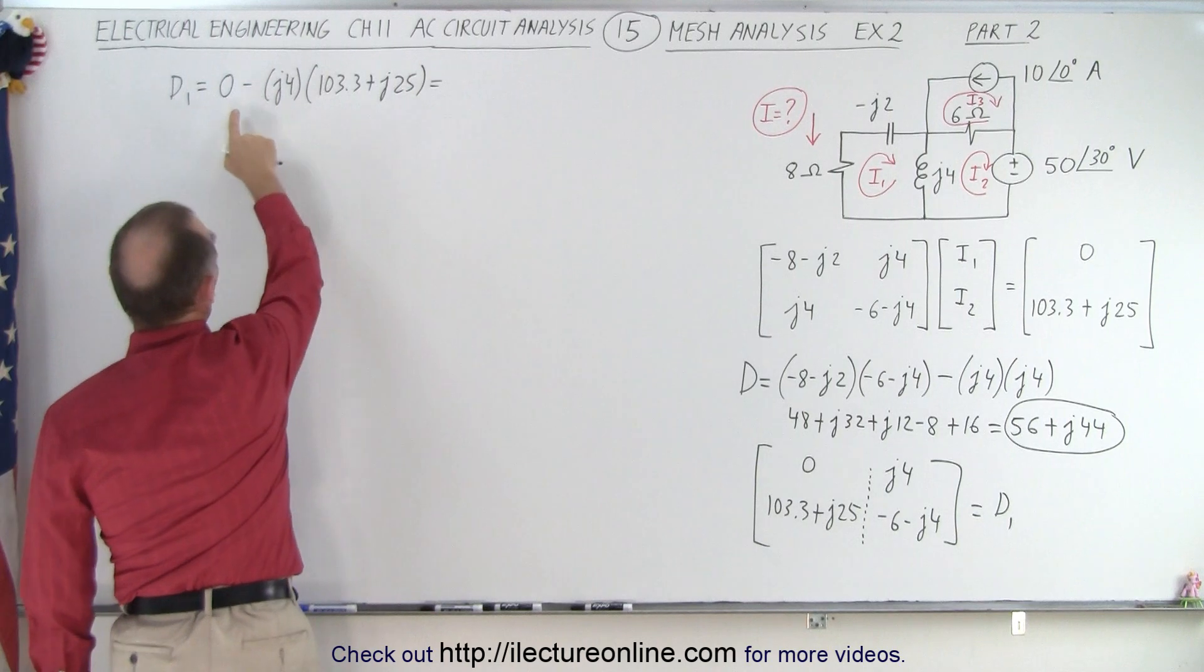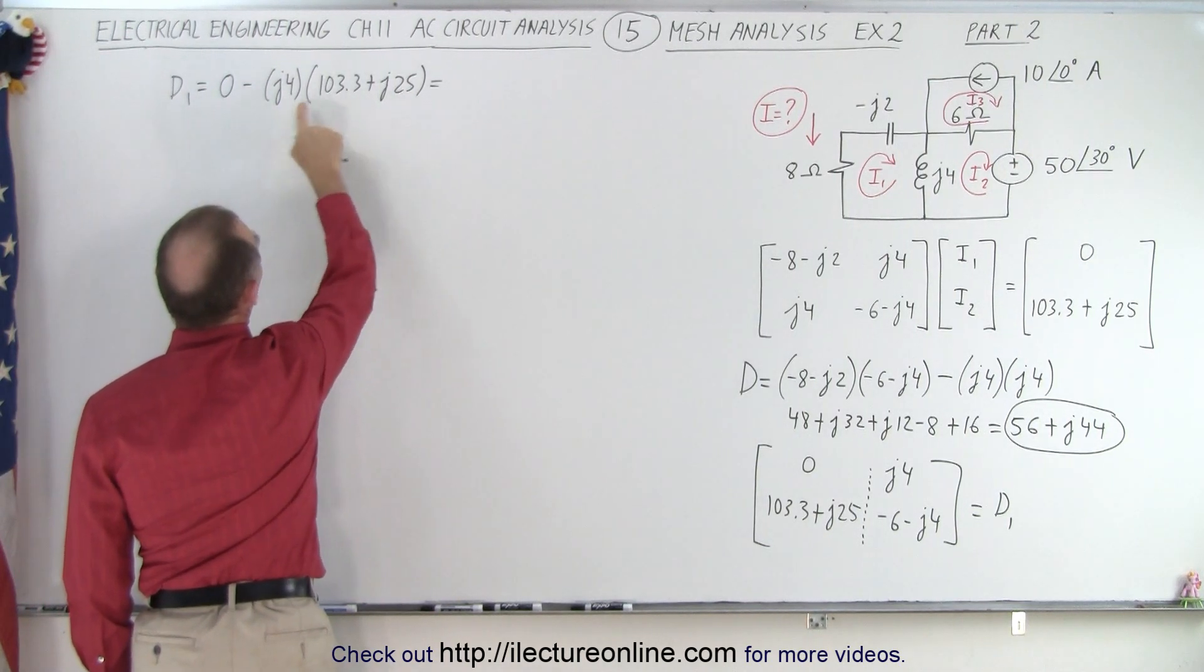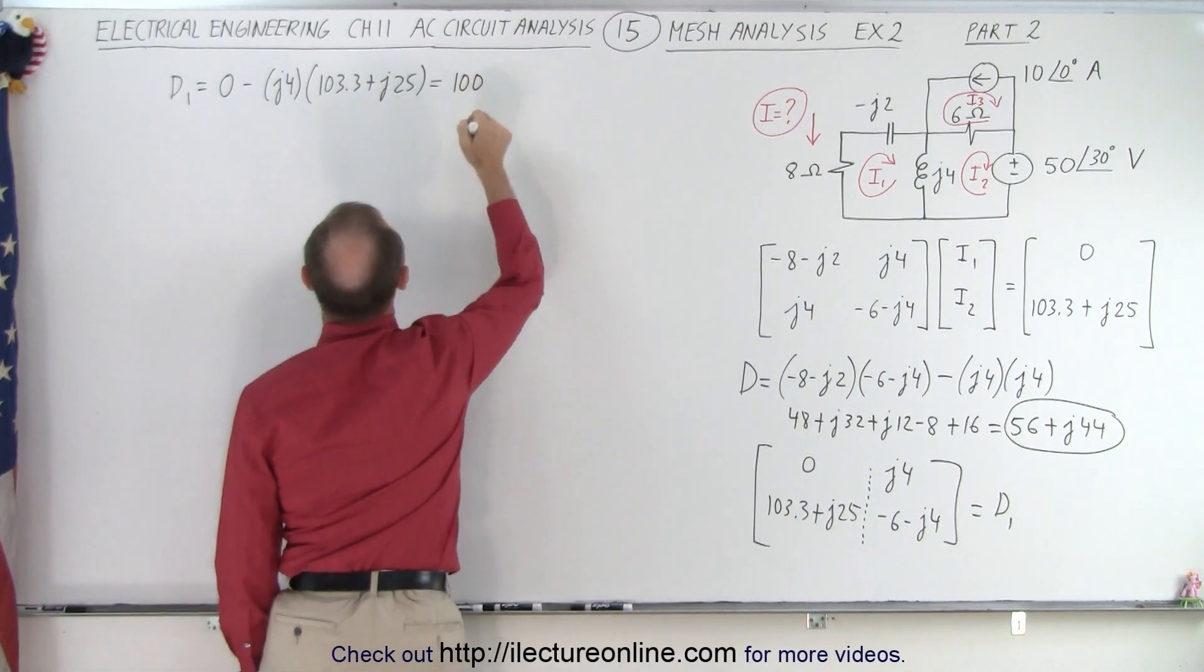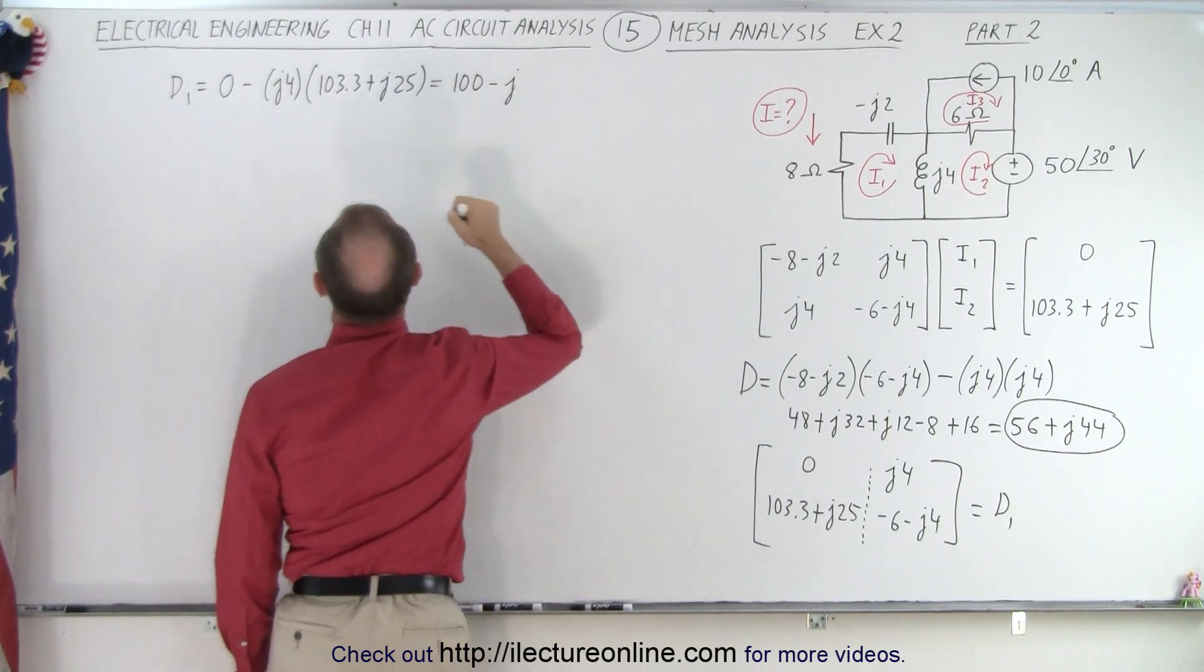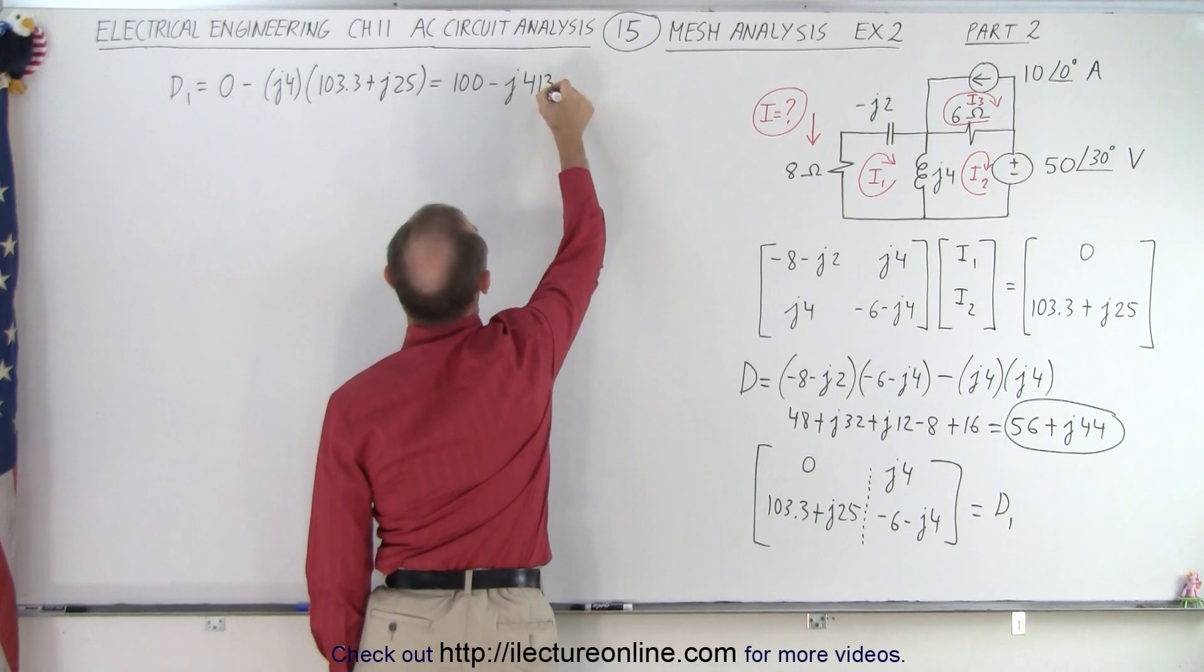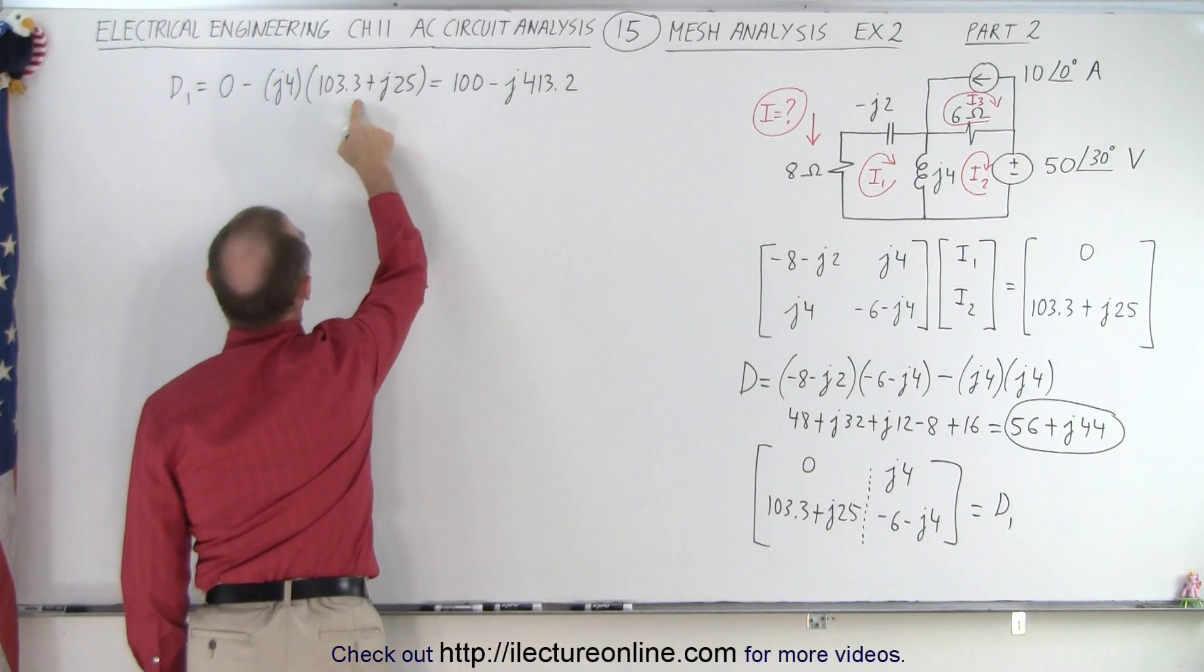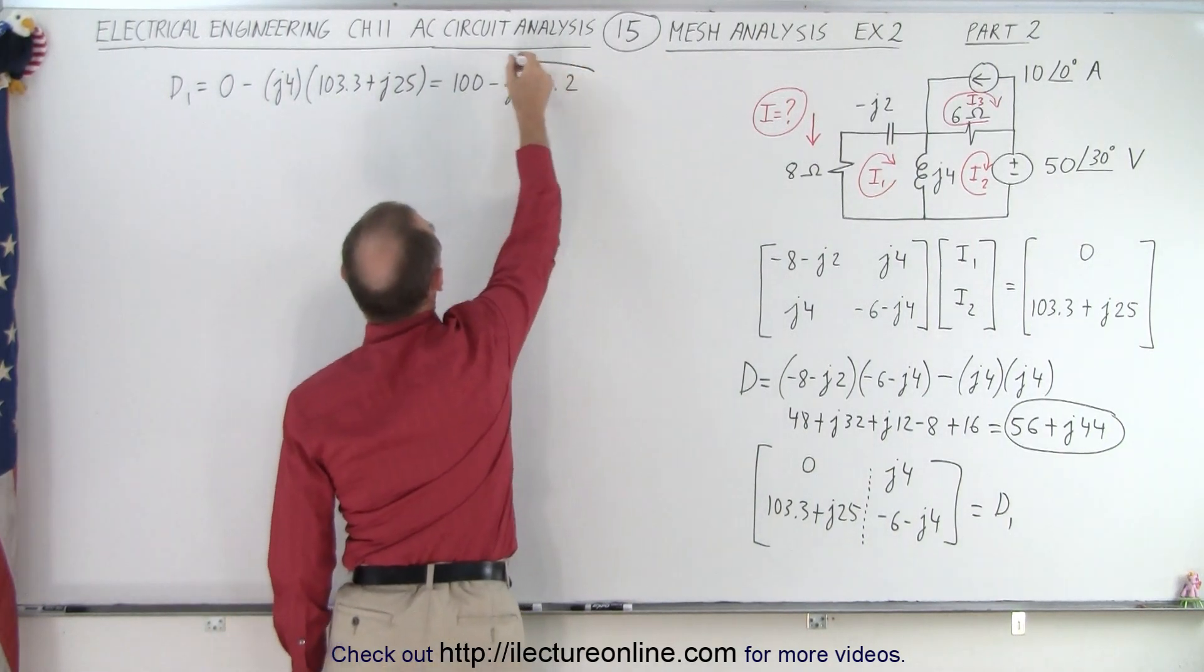So first we multiply this times this. We get 100 times a negative 1 times a negative gives me a plus 100. And multiply this times this, that gives me a minus J. 4 times that, that's 412, 413.2. So that gives me the value for D1.